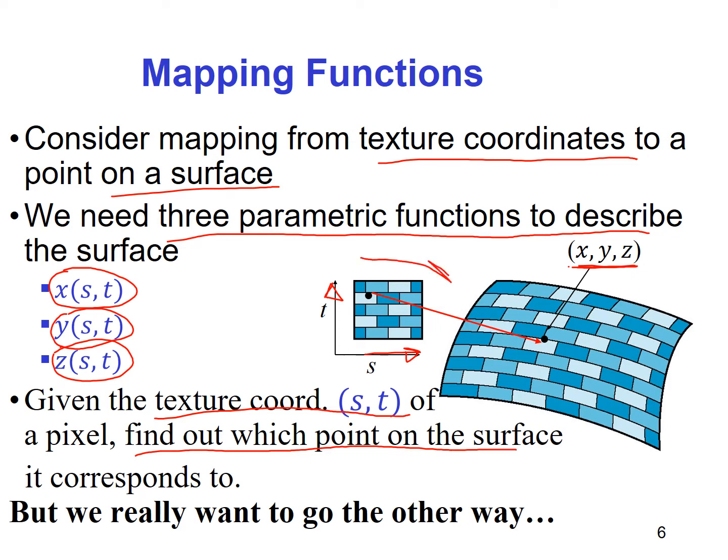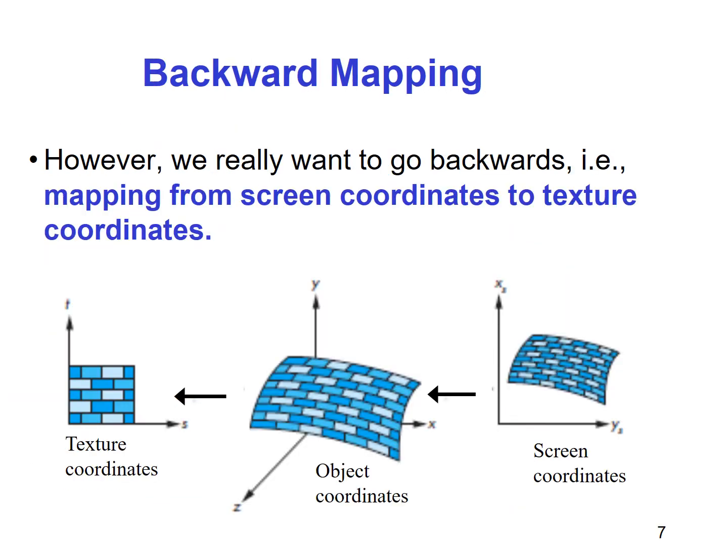This is the forward direction. However, we really want to go the other way around, because the point that corresponds to this pixel might not even be visible on the screen or might be clipped out. So we want to go from the points to the surface to find out which texture this point should take. This is called backward mapping.